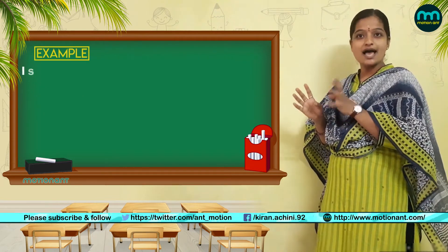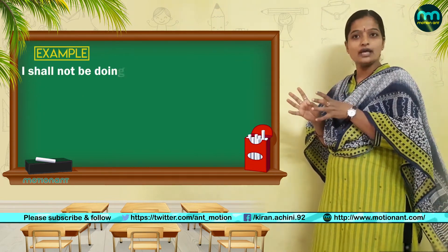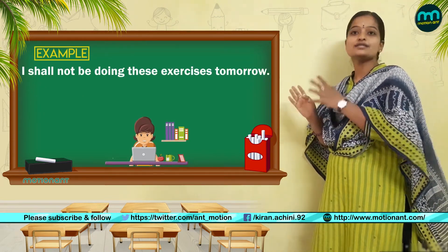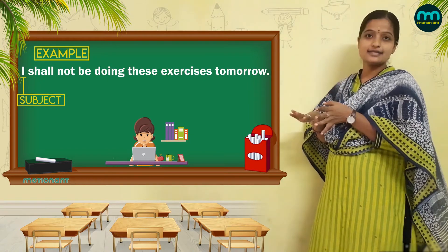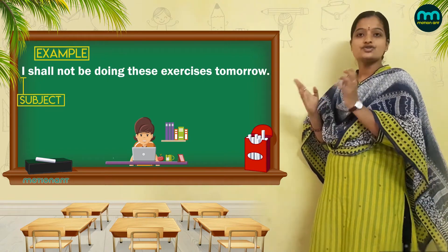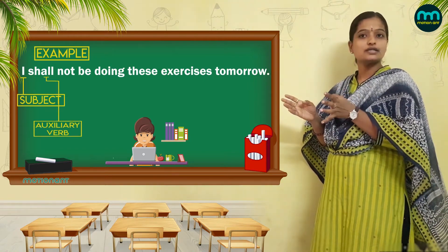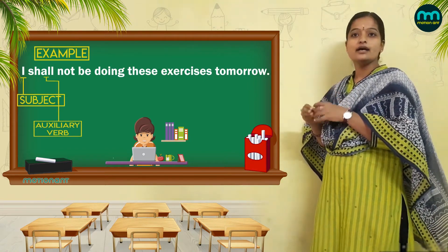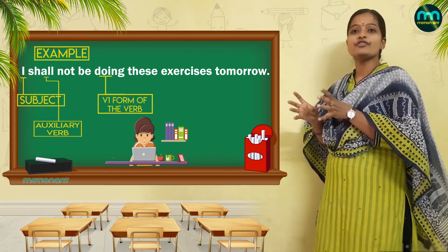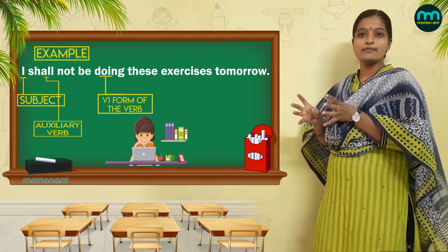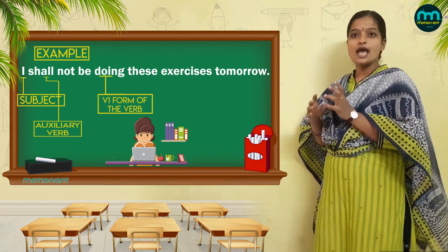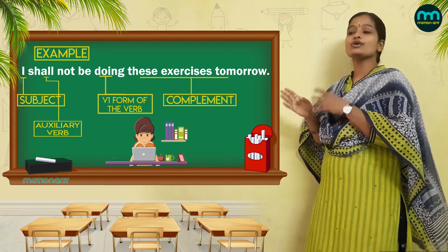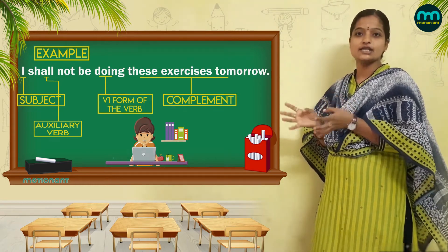Example: I shall not be doing these exercises tomorrow. Here, I is the subject, shall is the auxiliary verb, and doing is the V1 form of the verb with -ing added. And these exercises tomorrow is the complement of the sentence.